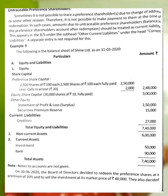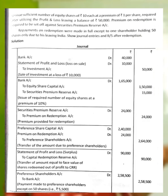On 31st March 2020, the Board of Directors decided to redeem the preference shares at a premium of 10%, and to sell the investment at its market price of Rs.40,000. They also decided to issue a sufficient number of equity shares of Rs.10 each at a premium of Rs.1 per share, required after utilizing the profit and loss, leaving a balance of Rs.50,000. Premium on redemption is to be set off against the securities premium account.